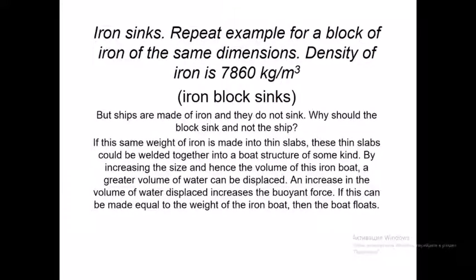Here is another example about iron. A block of iron has a density of 7,860 kg/m³ and sinks. But ships are made of iron and they do not sink. If the same weight of iron is made into thin slabs welded together into a boat structure, increasing the volume allows a greater volume of water to be displaced. The increased displaced water increases the buoyant force until it equals the weight of the iron boat — and the boat floats.